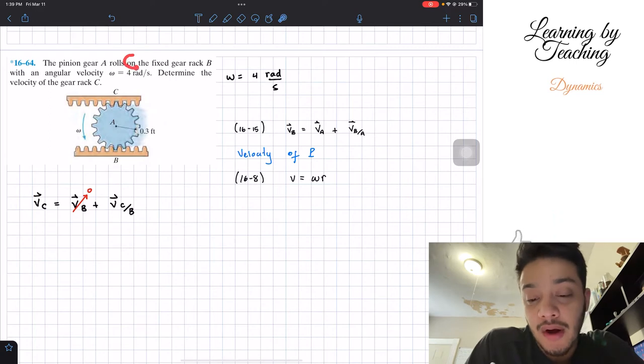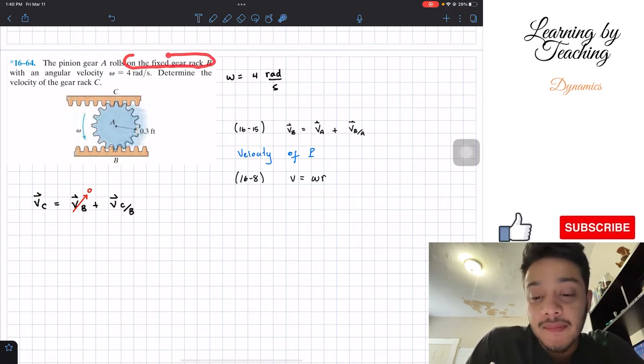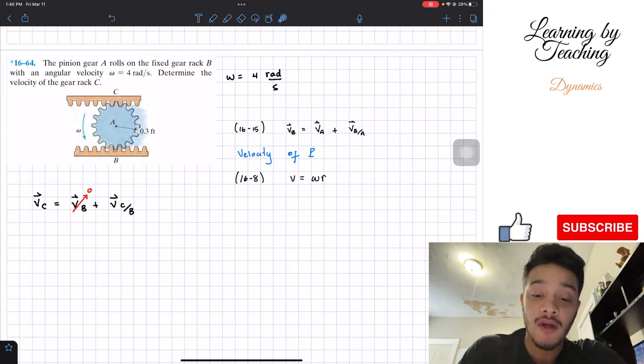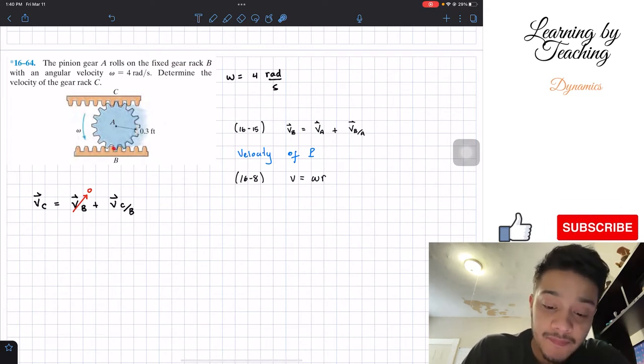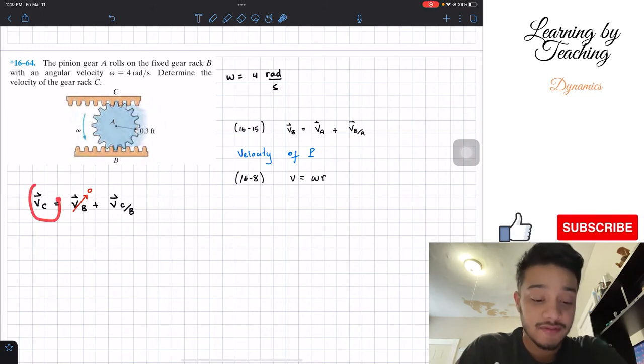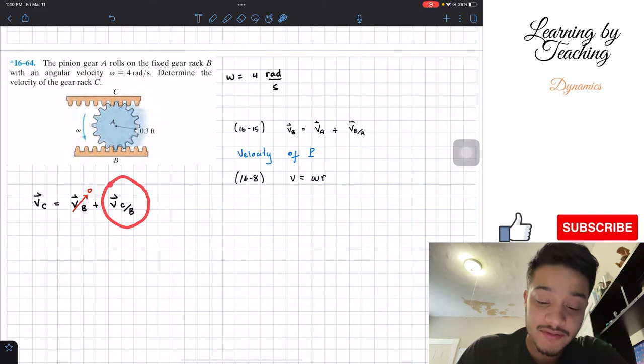Why is this velocity equal to 0? Well, if we pay attention to our problem statement, it says that rack B is a fixed gear rack, meaning that it's not moving. So the velocity of point B is equal to 0. Now, the velocity of C is only the relative velocity of C with respect to B.